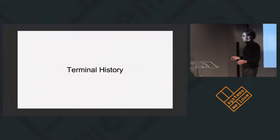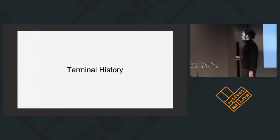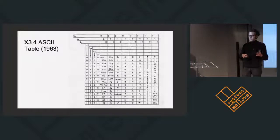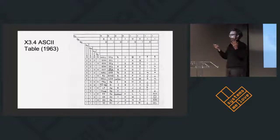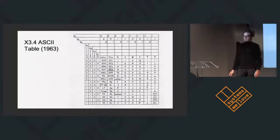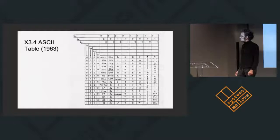Let's talk about terminal history. In 1963, there were a bunch of different ways to encode letters and numbers, and that created a lot of confusion when you're trying to exchange information. So they came up with the ASCII standard that we all know and love.